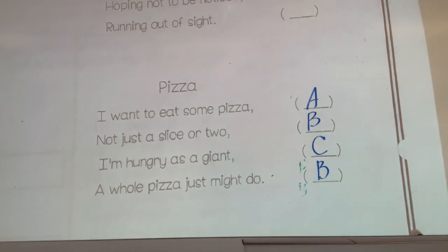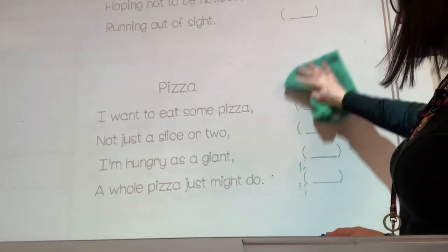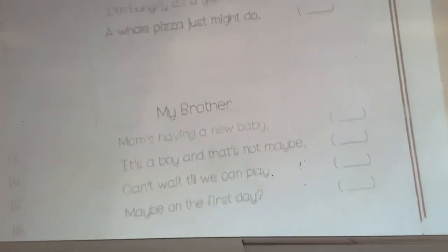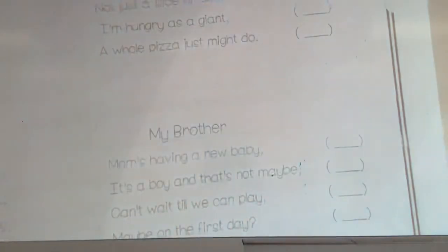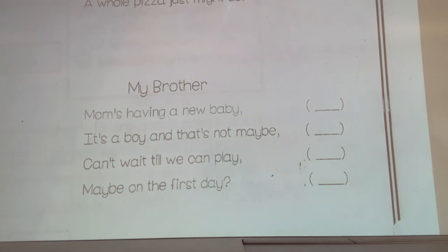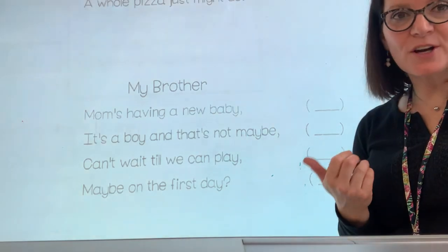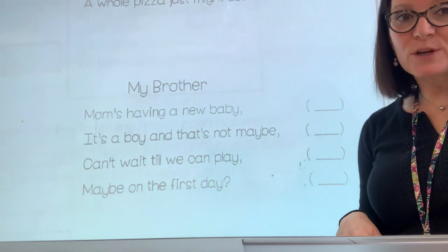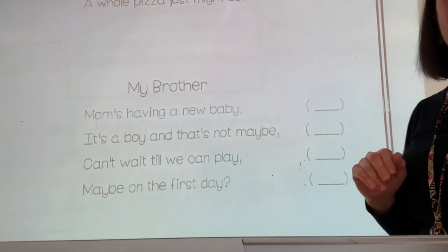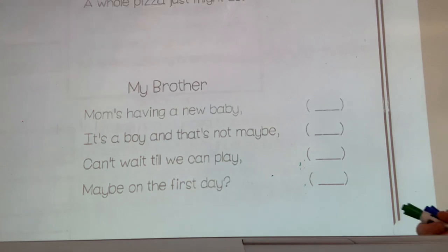I'm going to read to you the poem My Brother, and then I want you to guess the rhyme scheme and submit a photo as proof that you participated in this lesson. My Brother: Mom's having a new baby. It's a boy and that's not maybe. Can't wait till we can play. Maybe on the first day. Look at the last word of every line, figure out which sounds rhyme, and label your rhyme scheme. Then take a picture of the whole page and submit it for your participation and work completion today. Thank you.